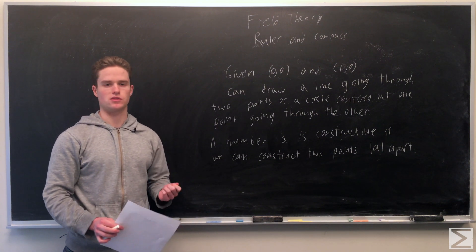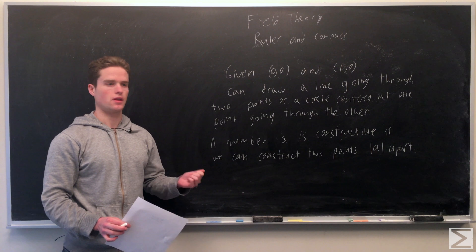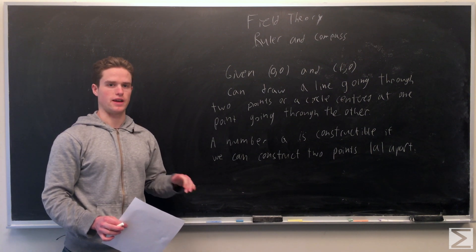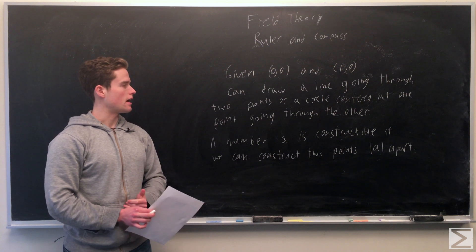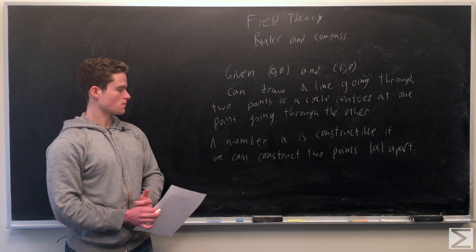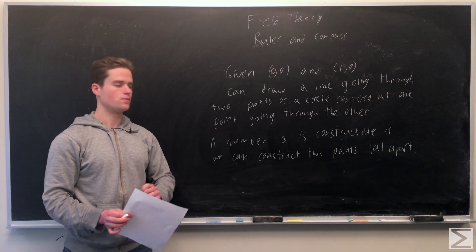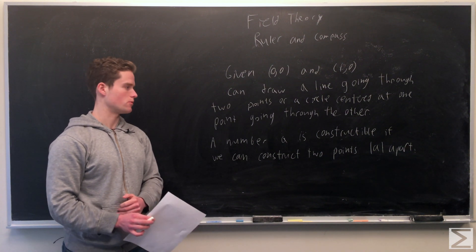Any intersections between circles or lines, those will be constructible points - points that we can specifically accurately make. We say a number a is constructible if we can construct two points absolute value of a apart. If a is constructible, minus a is also constructible.